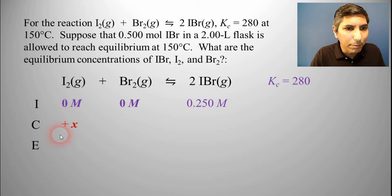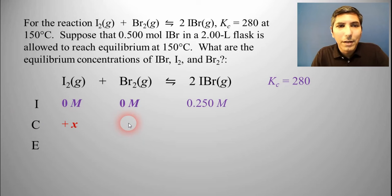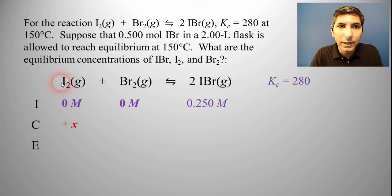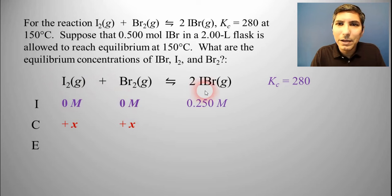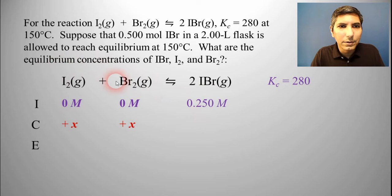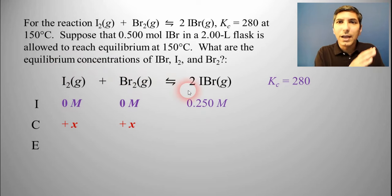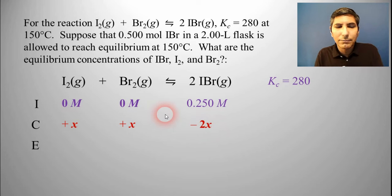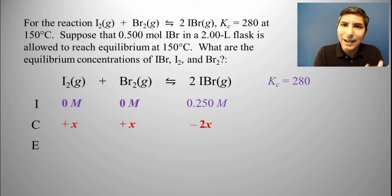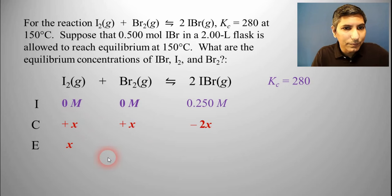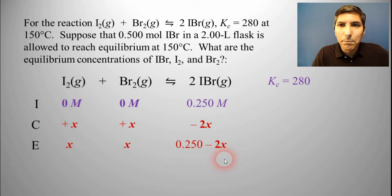I2 is going to go up by X, so its change is plus X. Br2 is the same — it goes up by the same amount because it's a one-to-one mole ratio, so Br2's change is also plus X. IBr's change is two X, because the mole ratio is one to one to two. But since IBr is on the other side of the arrow and is decreasing as the products form, this is minus two X. So our equilibrium row shows: I2 is X, Br2 is X, and IBr is 0.250 minus two X.